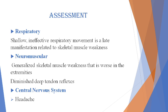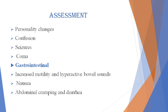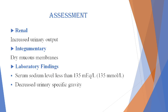Respiratory symptoms include shallow, ineffective respiratory movement. This is a late manifestation of hyponatremia due to skeletal muscle weakness. Neuromuscular symptoms include generalized skeletal muscle weakness that is worse in the extremities, and diminished deep tendon reflexes. In the central nervous system, headache, personality changes, confusion, seizures, and coma may occur. Gastrointestinal symptoms include increased motility and hyperactive bowel sounds, nausea, abdominal cramping, and diarrhea.